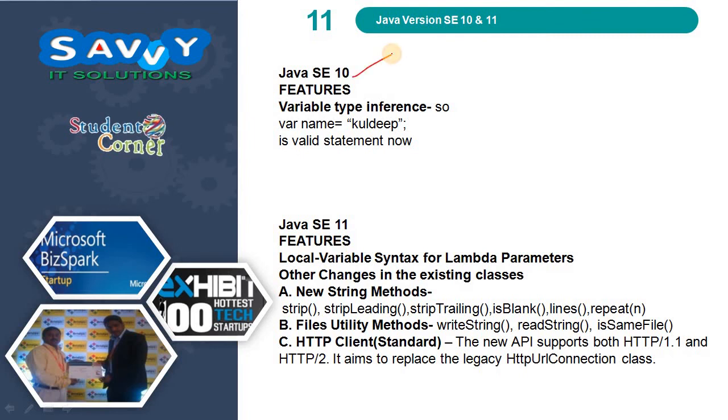Java 10 introduced Variable type inference using the var keyword, so a statement like 'var name = value' is now valid.